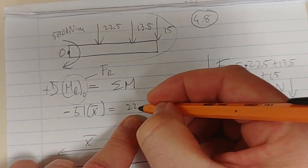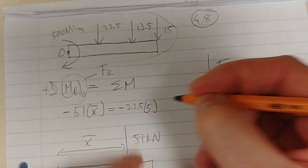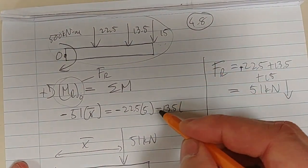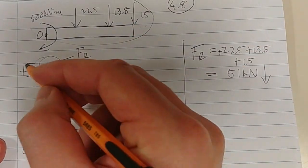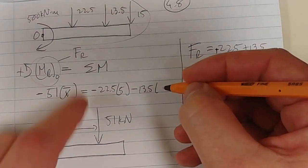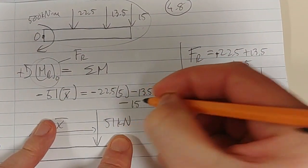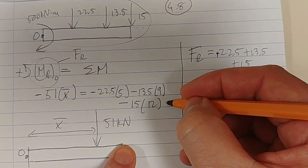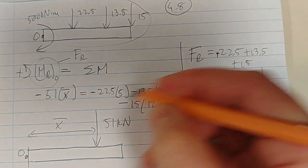We've got 22.5, it should be minus. That distance was 5. Minus 13.5, and remember that minus is not because it's a negative force, that minus is because it's going in a clockwise direction. That was 9, minus 15, the moment due to that 15, times 12. Then we need to still include this couple moment, which is minus 500.